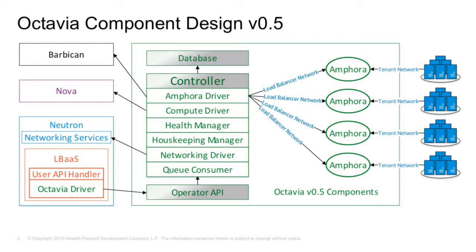We have a queue consumer that listens to the operator API and executes commands. We have a networking driver to plug the network, a housekeeping manager to clean up broken VMs, a health manager to manage the health of everything, and a compute driver to do the Nova work to spin up a VM — or we call it an amphora (M4), because there will be containers too. We don't want to be tied to VMs; it could even be Ironic. M4 encompasses everything.